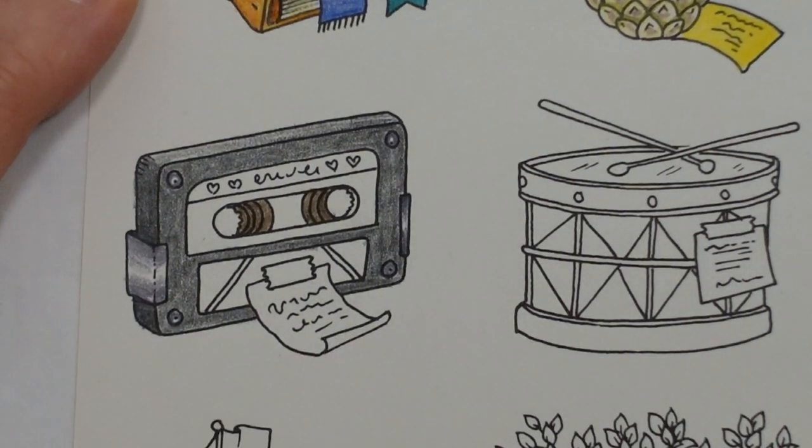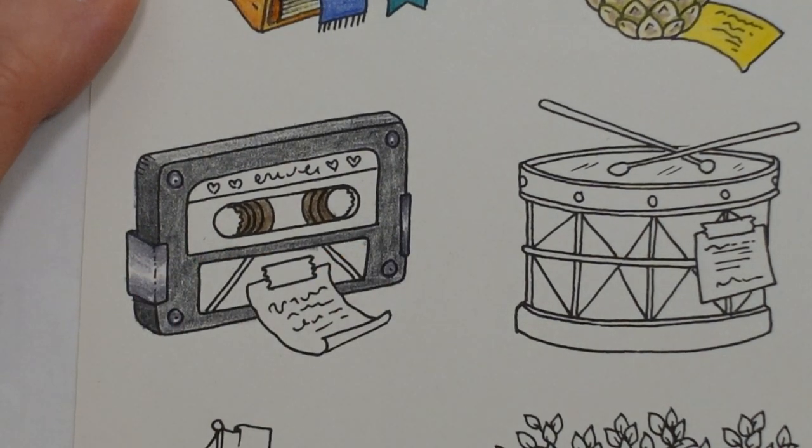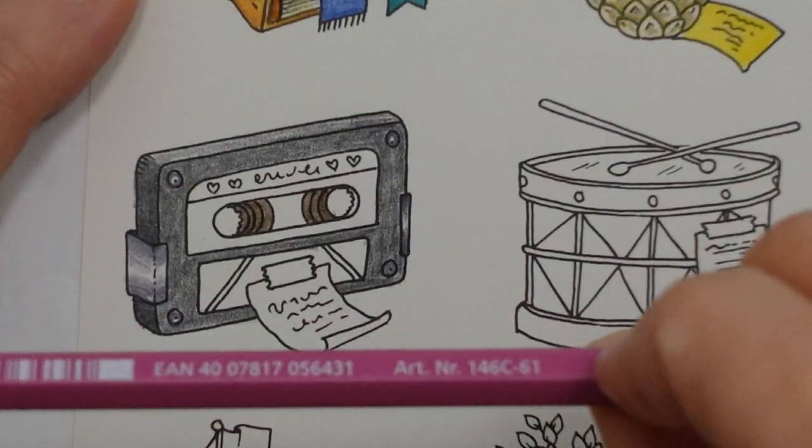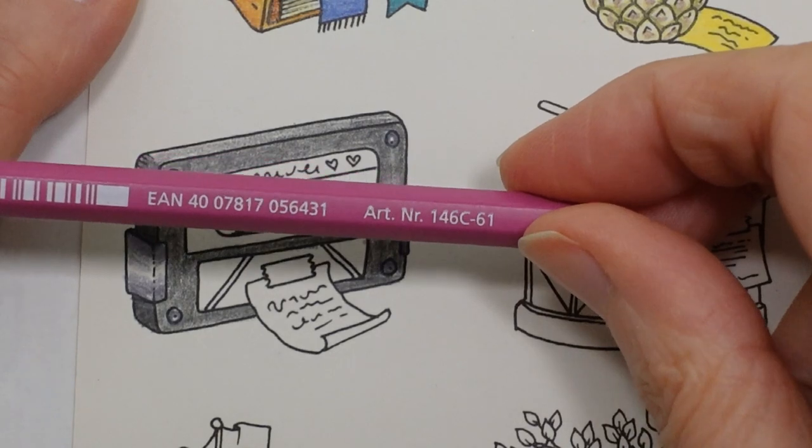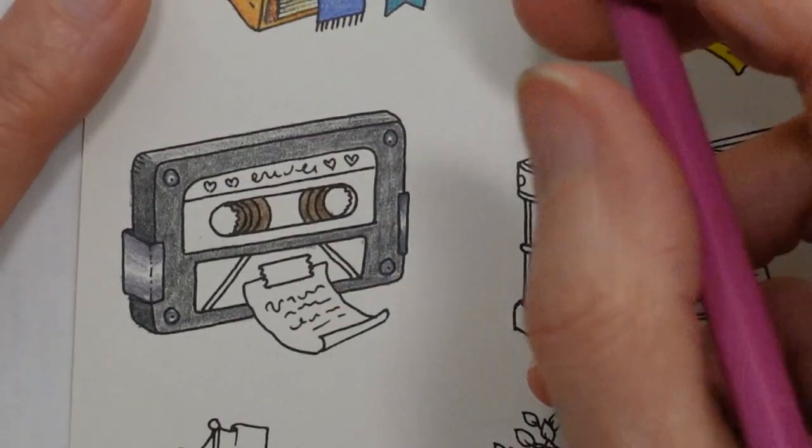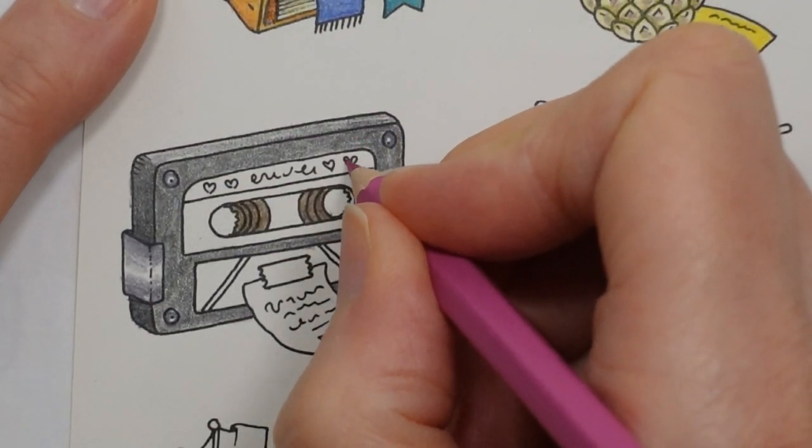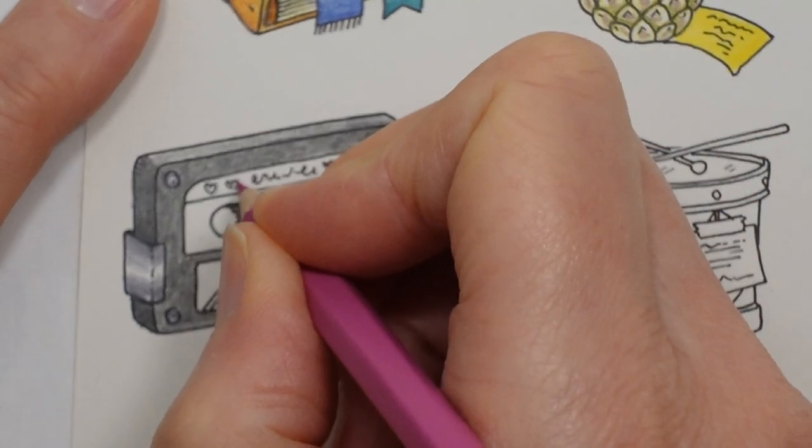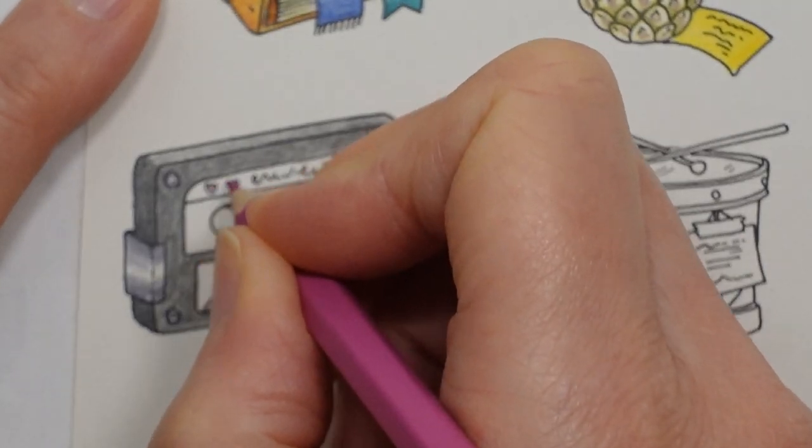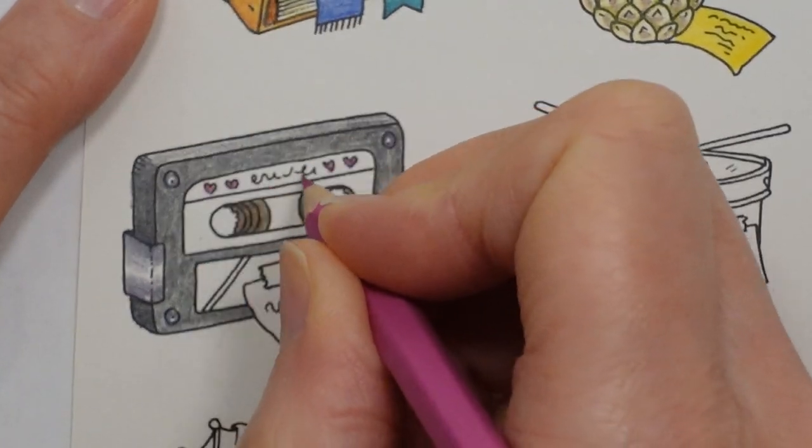So we've got the little hearts I'm thinking a really bright pink the number 61 which is our dark mauve we'll use that for the hearts. Maybe they're just love songs it's cute isn't it I think it's clever what Johanna does is she just writes a sort of nonsense word on there.